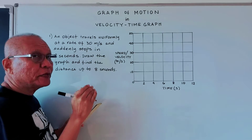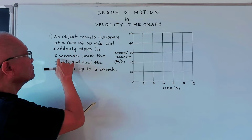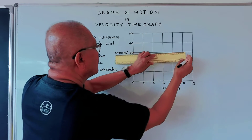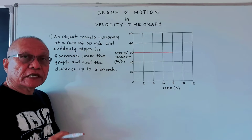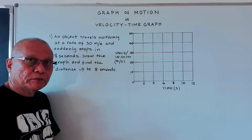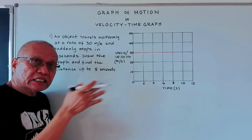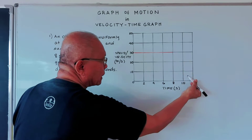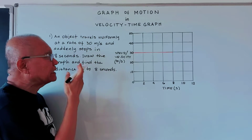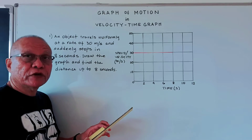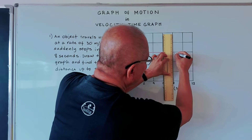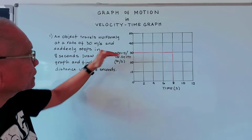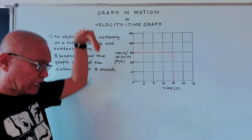For how many seconds? For 8 seconds. So we draw the graph up to 8 seconds here. After reaching 8 seconds it suddenly stops. In reality it would be a line gradually going down, but since it suddenly stops we draw a vertical line here. That is the graph of an object traveling uniformly and then suddenly stopping — horizontal and then suddenly vertical.